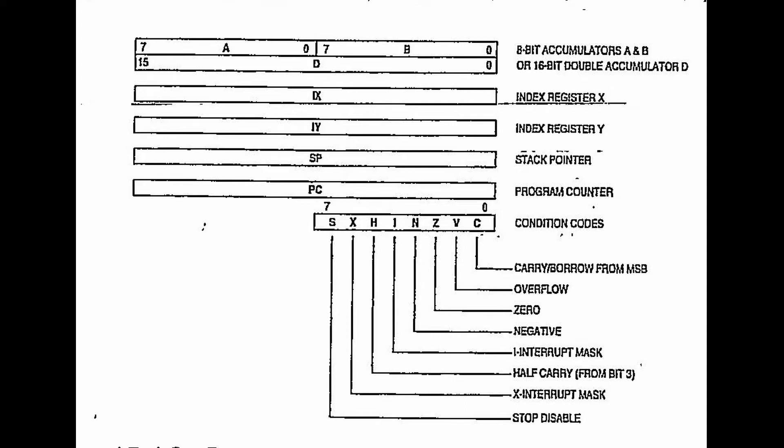The program counter keeps track of the program numbering each step by numbers. The condition code register keeps track of the mathematical operations, that is do we have a negative or a zero. And finally the stack pointer points in the direction of certain complex operations which we will cover later on.